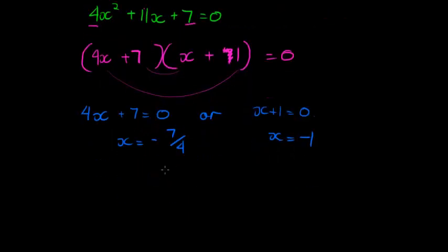Negative 7 over 4 can be simplified a little bit more. Let's say -1.75.